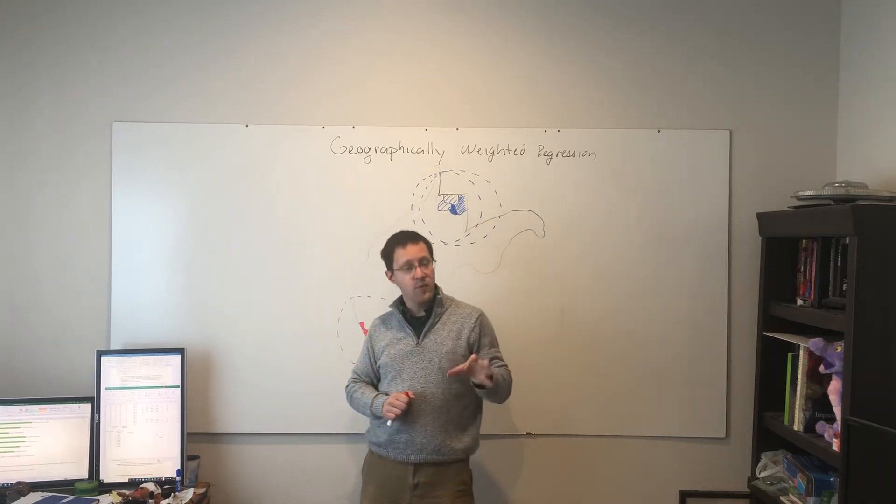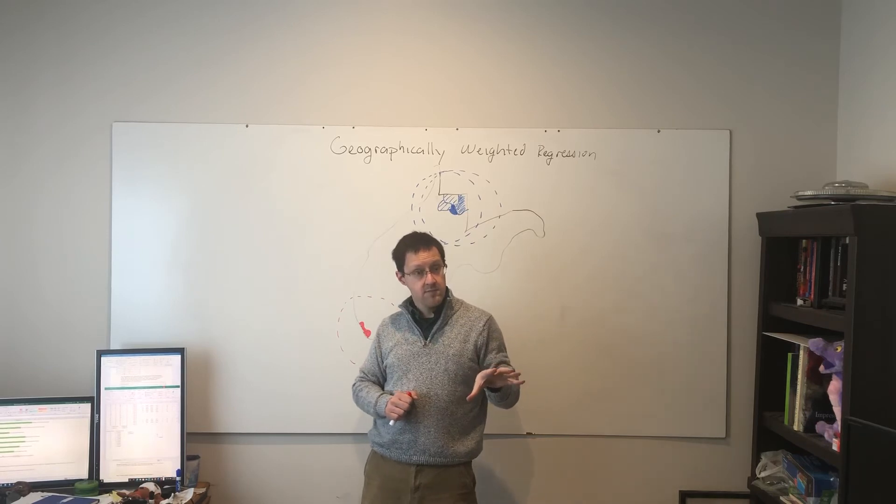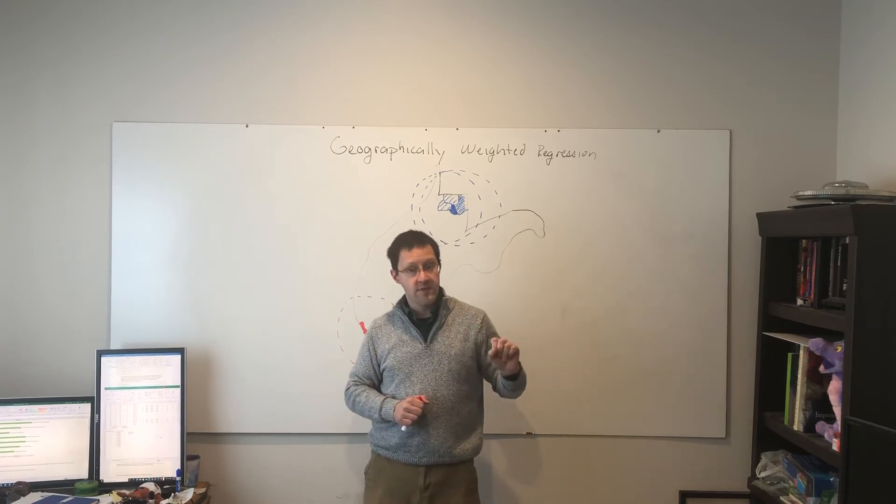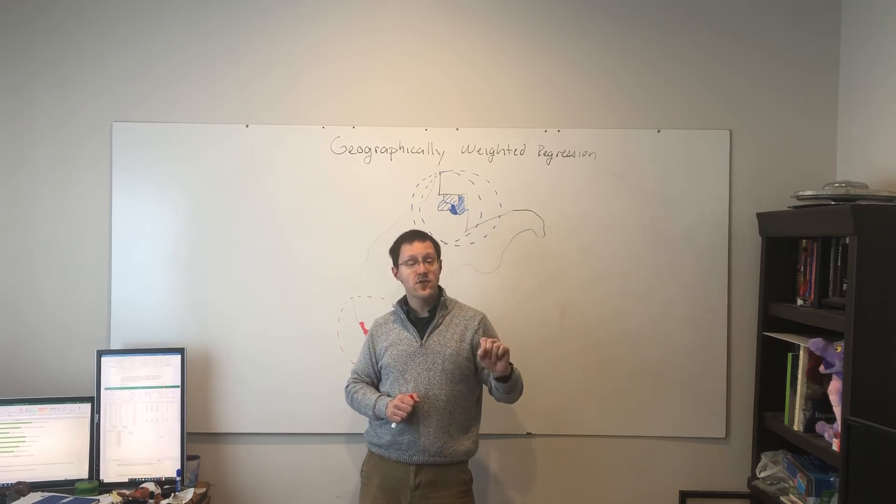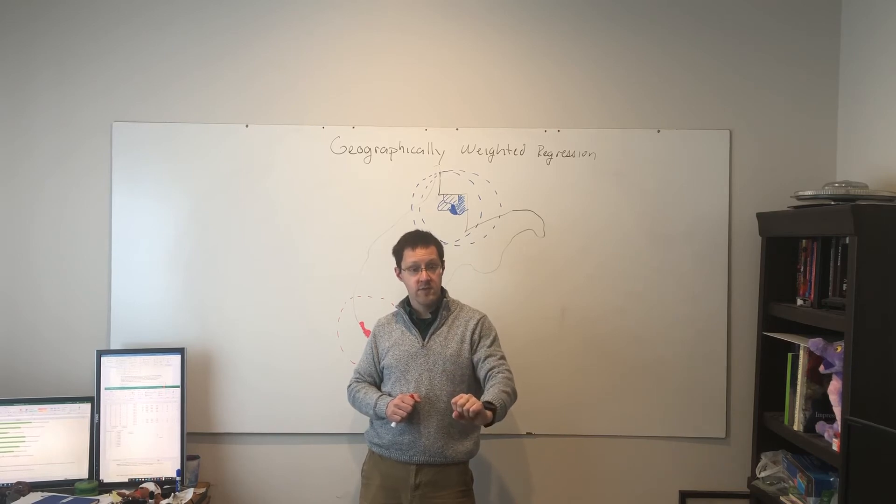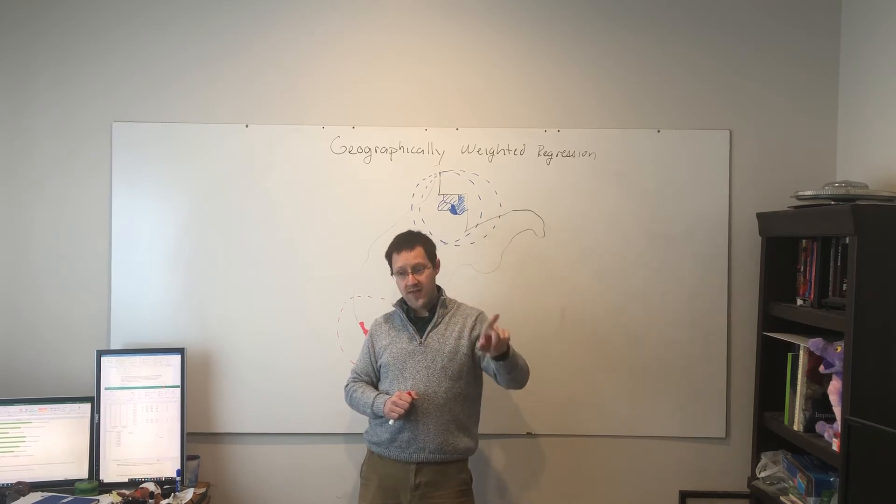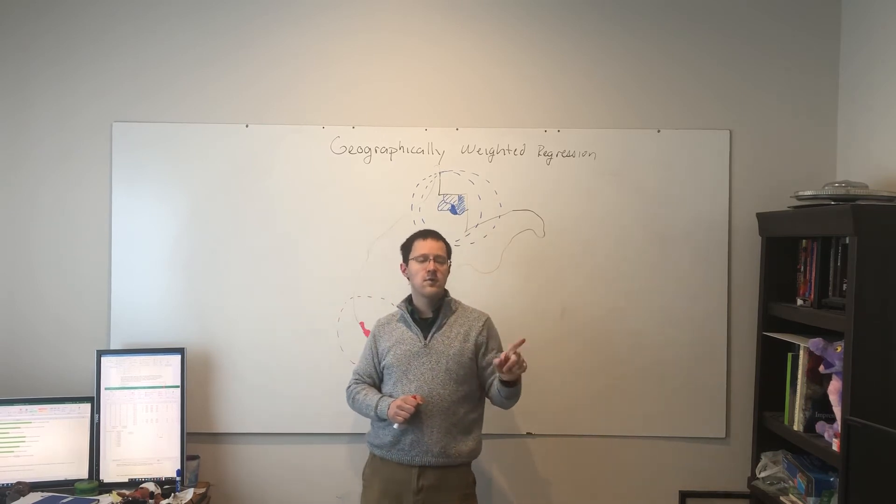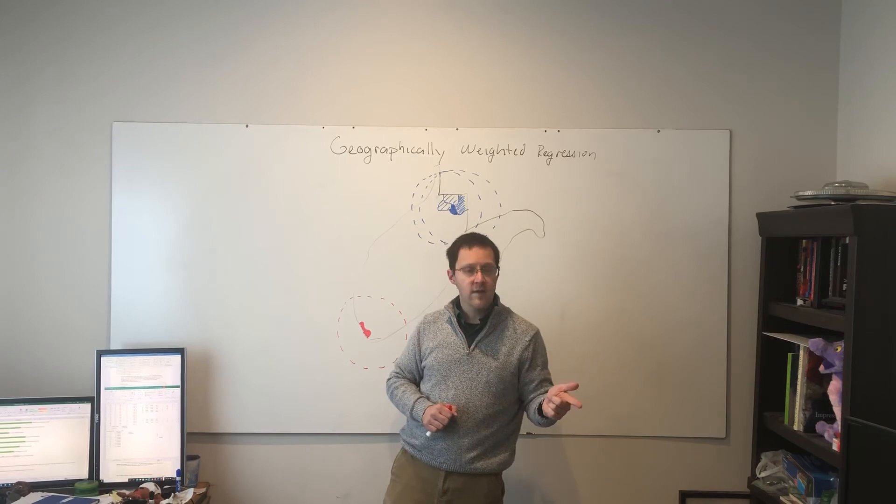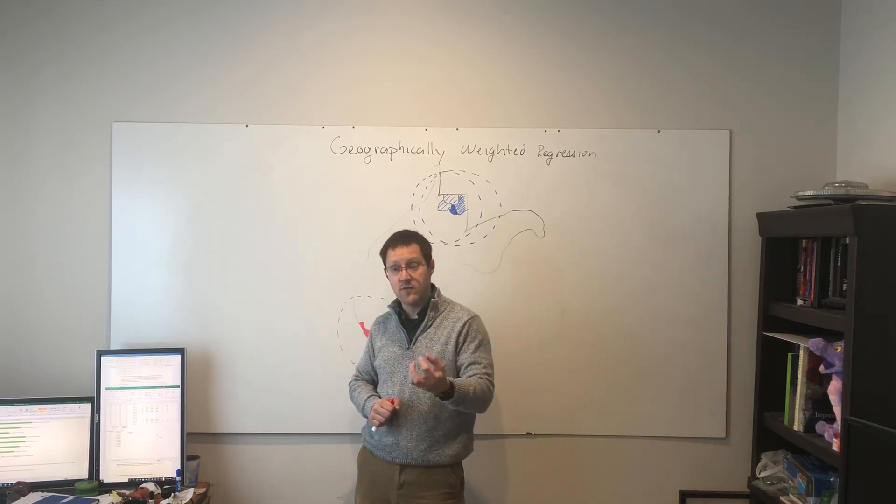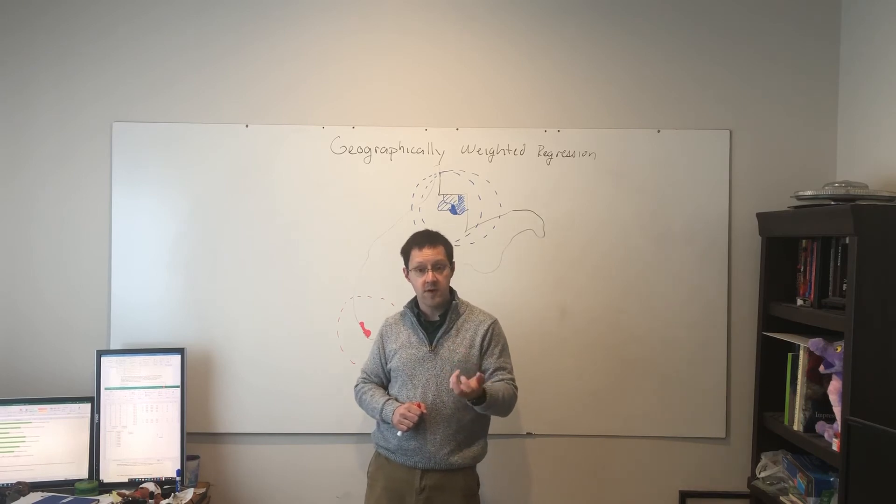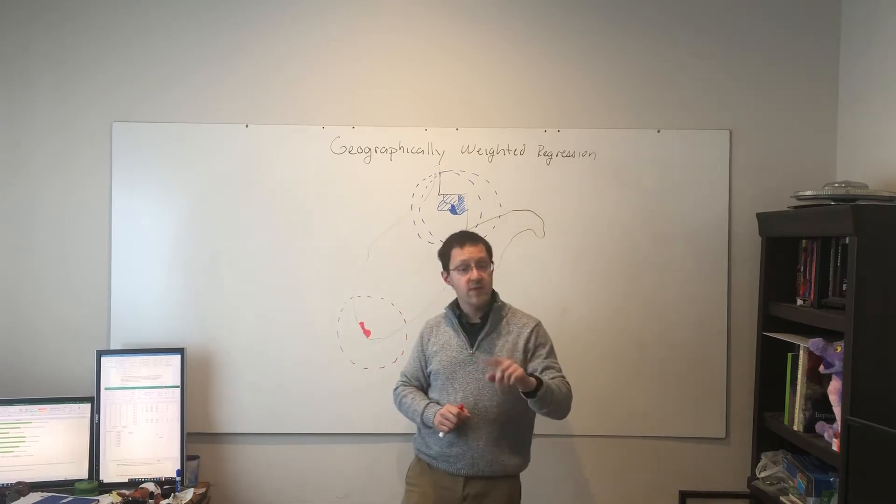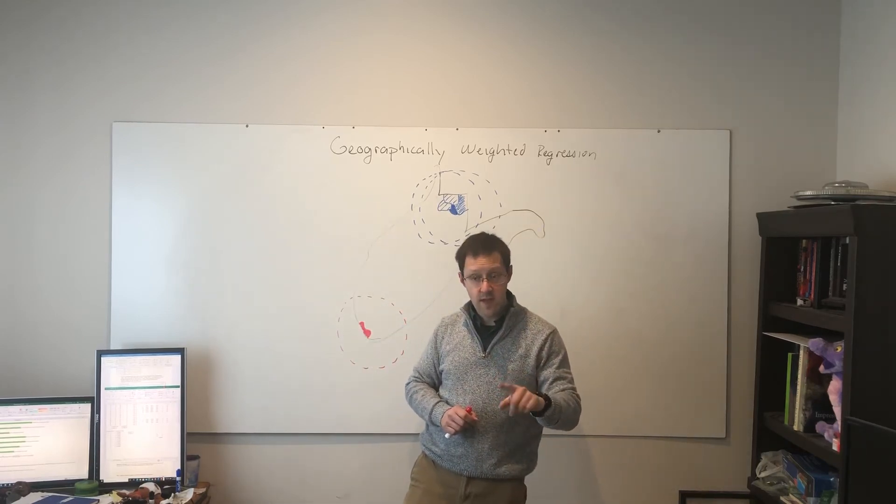It's sort of the same way we would look at the local Moran's I clusters. The bright blue, the bright red counties, were the centers of the low-low and high-high clusters. By that average, you could also say the counties surrounding those clusters also, on average, were high to make that cluster relationship or local autocorrelation relationship work. The local regression here is going to need the neighbors to work.